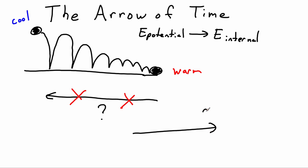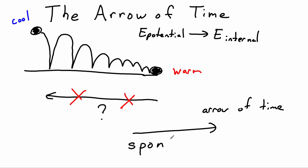What we do see is things going in this direction — we'll call this direction the arrow of time. Processes that happen in this direction naturally happen without any outside influence. We don't have to do anything to get the ball to stop bouncing; it just naturally does. We're going to call processes that naturally go forward with the flow of time spontaneous. A spontaneous process is one that just continues forward with the natural flow of time.